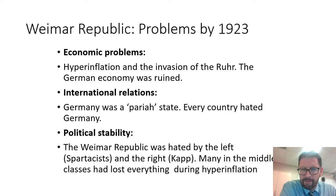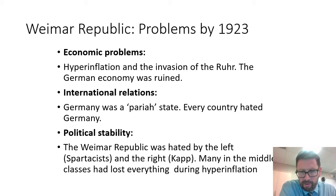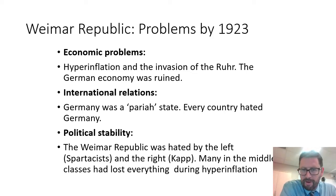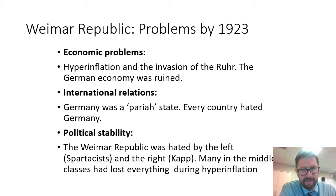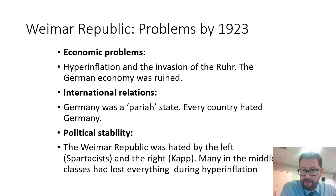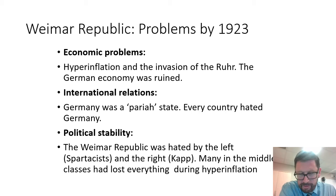Not only that, Germany had problems in terms of its international relations. Germany was what we call a pariah state, which very simply means that every country despised and hated Germany. And finally, there were problems of political stability inside Germany. The Weimar Republic was hated by the left — the Spartacists had attempted to destroy the Republic in 1919 and the right had attempted the same in 1920. After the hyperinflation, many in the middle classes had lost everything and they too despised the Republic. So politically in 1923, the Weimar Republic was very weak.